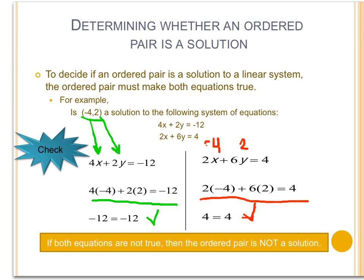Therefore, negative 4, 2 is a solution to the system of equations. To keep in mind, if both equations are not true after plugging in the ordered pair, then that ordered pair is not a solution to that system.